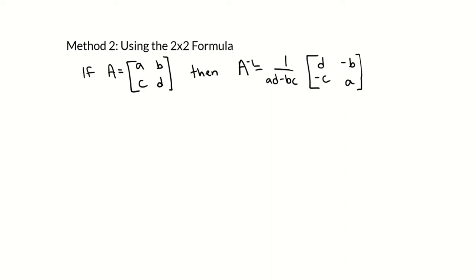The second method only works for 2 by 2 matrices, so it won't extend to 3 by 3 or 4 by 4. What we do is use a formula to change the matrix to get the inverse. The formula for the inverse is 1 over AD minus BC, then we switch A and D along the right diagonal, and we change the signs of B and C along the left diagonal — they stay in the same spot, we just change their signs.